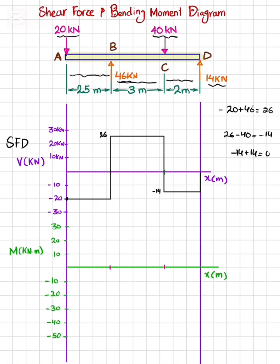Now moving toward the bending moment diagram. The first area under the shear force diagram is a rectangle, having area minus 20 multiplied by 2.5 which will give you minus 50. So at point B we will have minus 50. Now you can see that the shear force is a horizontal line with 0 degrees, so the bending moment will be one degree higher and it will be a straight line with decreasing slope.